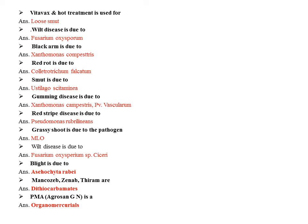Blight of Bengal gram is caused by Ascochyta rabiei. For control, fungicides used include Mancozeb, Zineb, Thiram, Artha, and dithiocarbamates. PMA (phenylmercury acetate) and Agrosan GN are organomercurial fungicides used for seed treatment.